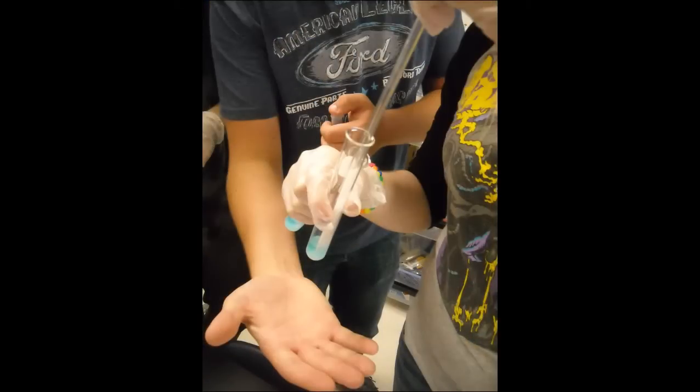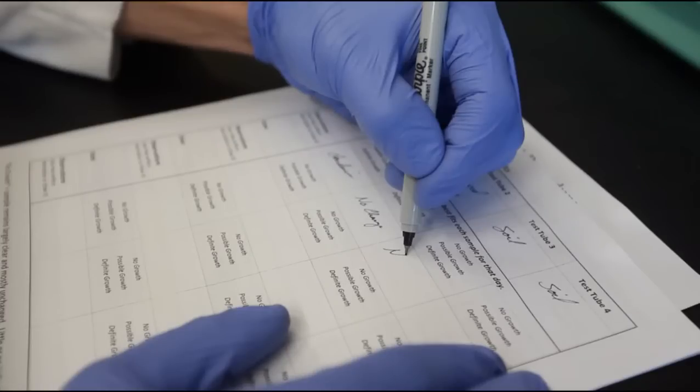We did have controls, and so they would have to do three test tubes: a control, sample one, and sample two. And then they would have to predict which one they thought was going to be most effective, and then state why, and then follow up with what was actually the case.